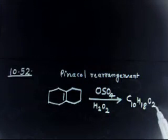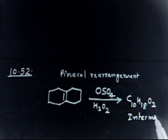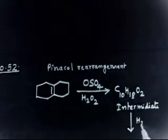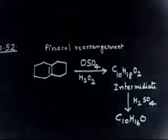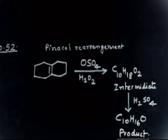This is the intermediate. Now this intermediate is treated with H2SO4. Basically you can derive the product in this case yourself. This gives C10H16O. This is the final product. So just derive this product using the mechanism.